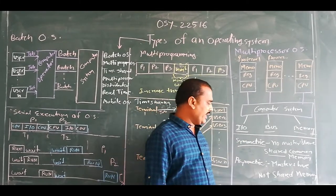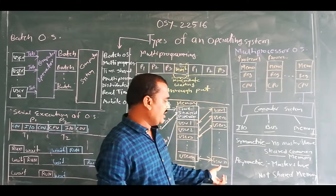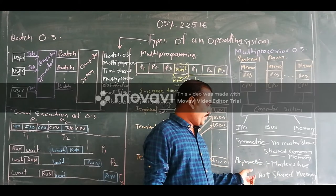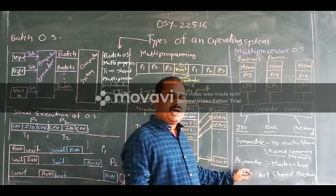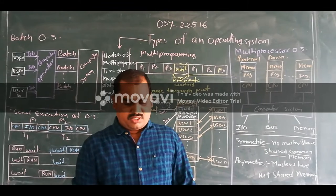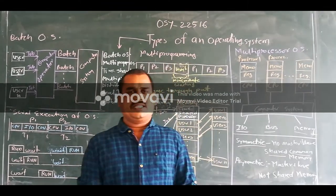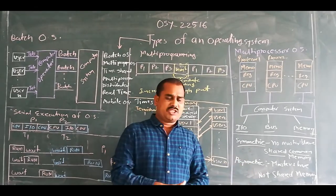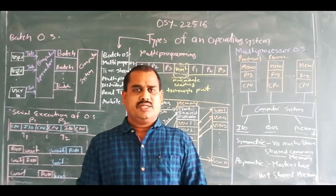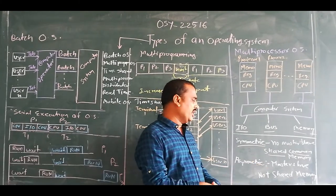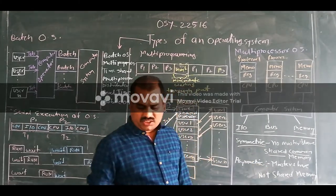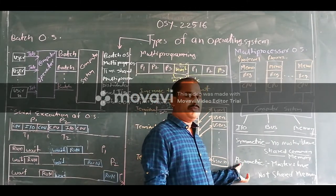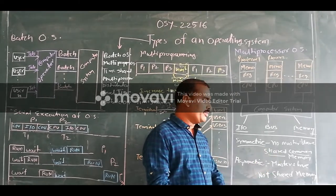Inversely, in an asymmetric multiprocessing system, all the computers do not share a common naming — they act as a master-slave, which means among those, one acts as a master. It will perform all the activities of the asymmetric multiprocessor system — it allocates, then it executes, or allocates and then assigns the tasks to all the systems. In this way, in an asymmetric multiprocessor system, the master-slave relationship exists.